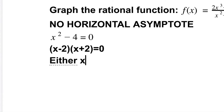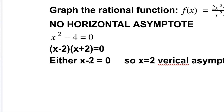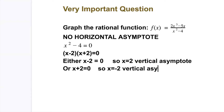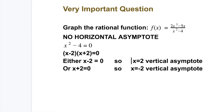Either x minus two equals zero, so x equals two. Or x plus two equals zero, so x equals negative two. We will have two vertical asymptotes: x equals two and x equals negative two. So here I have two asymptotes. How many helping points do we take? For x equals two, give one number before and one after.